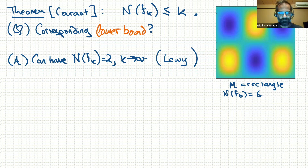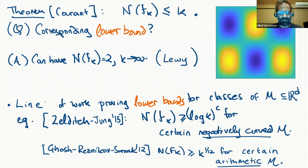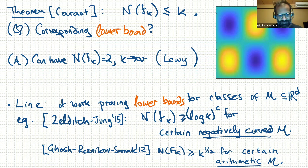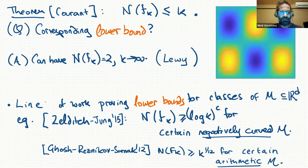People have focused on proving lower bounds on nodal domains for special restricted classes of manifolds. Some highlights: Zelditch and Zhang showed that for certain negatively curved manifolds, the number of nodal domains goes to infinity as polylog of the index. Ghosh, Reznikov, and Sarnak showed the number grows as k to the 1/12th for certain arithmetic manifolds, assuming some number-theoretic assumptions.